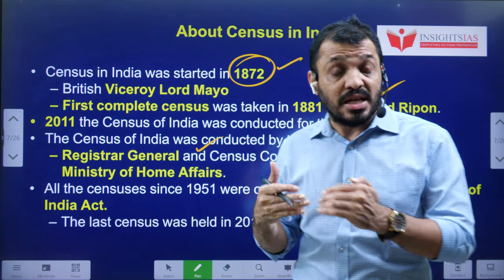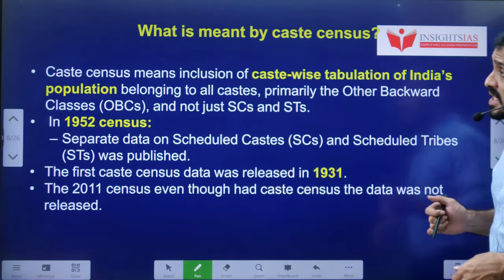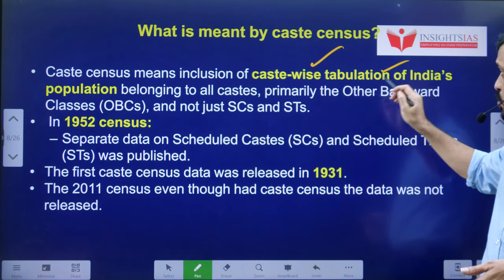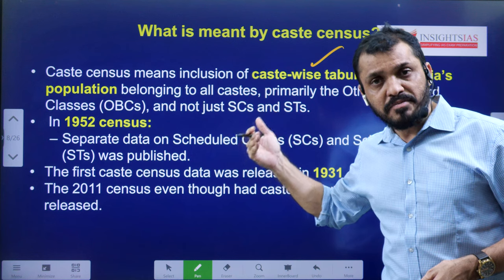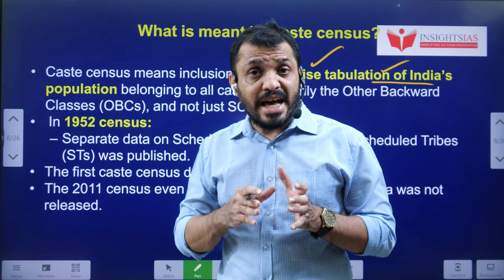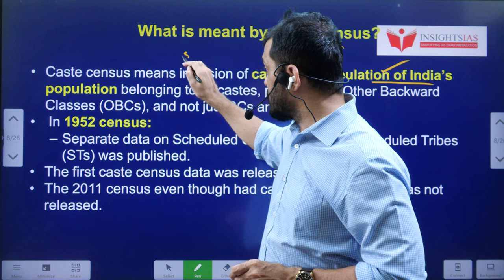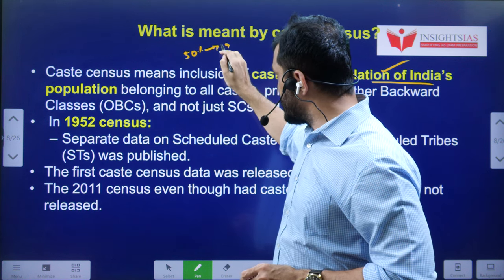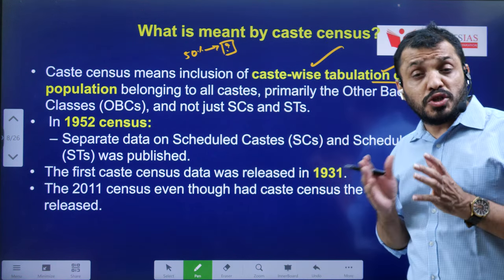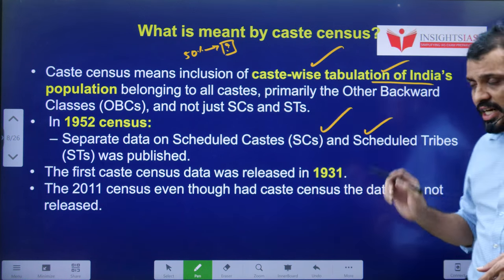Caste census means inclusion of caste-wise data — SC, ST, and all the different types. Caste-wise reservations should not be more than 50% — this was mentioned by the Supreme Court. For the first time in 1952, caste-wise data related to SC and ST was calculated.